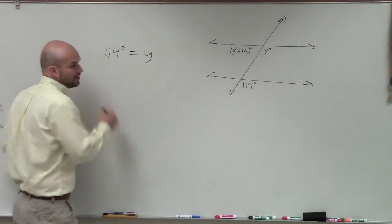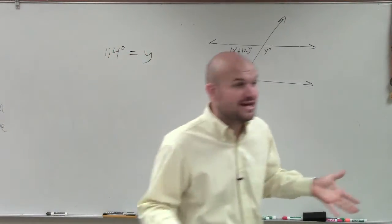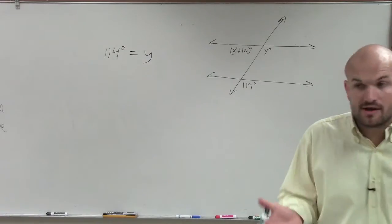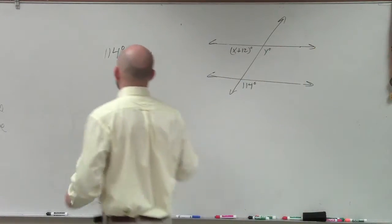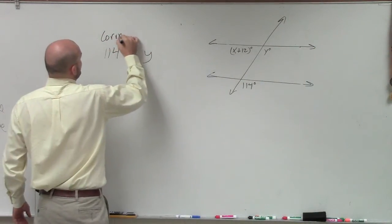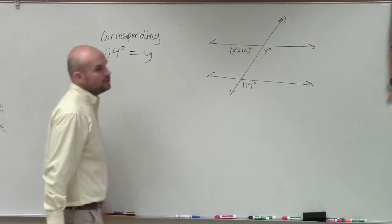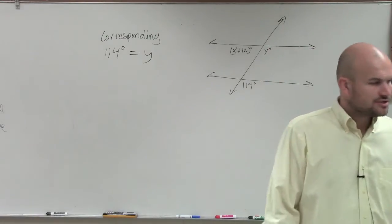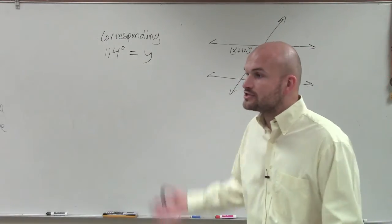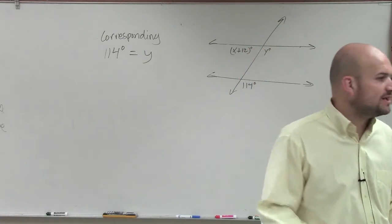Because why are those equal to each other? Remember I said, whenever you set an equation, you need to tell me where that equation came from. Why are you saying that? Because they're corresponding. You have to write corresponding in there. So now we know that those are corresponding angles, and corresponding angles are equal in measure.